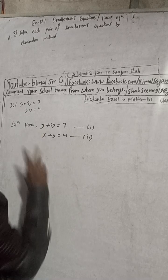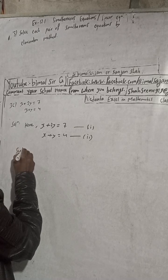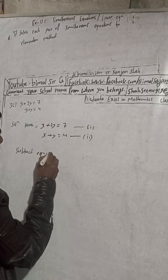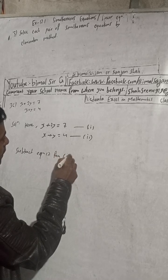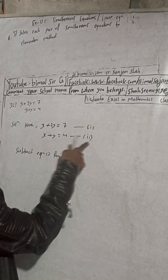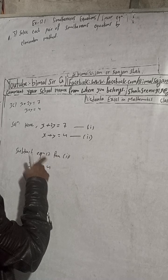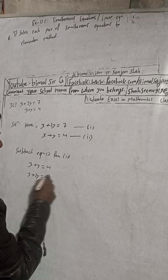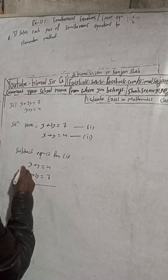If we subtract, the x will be cancelled — eliminated. So we will subtract equation 1 from equation 2. Write equation 2: x plus y is equal to 4, and below it write equation 1: x plus 2y is equal to 7. Now subtracting means we have to change the signs.